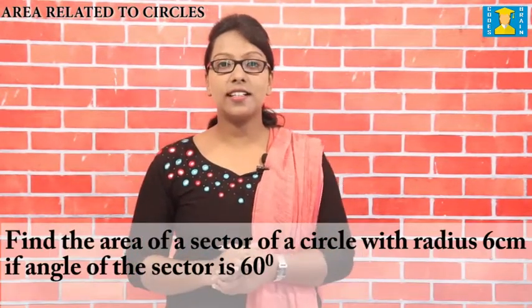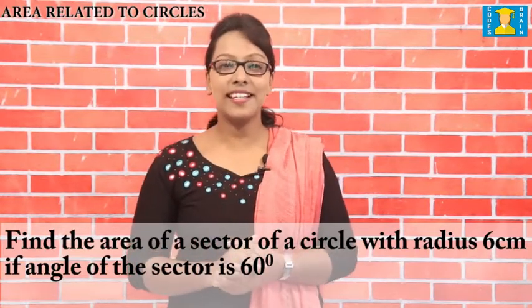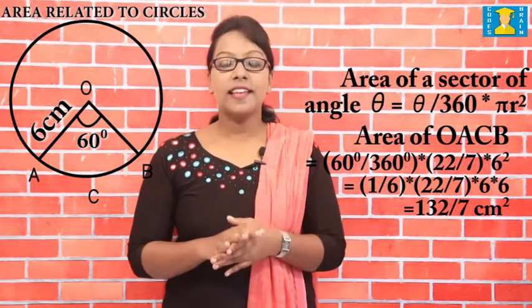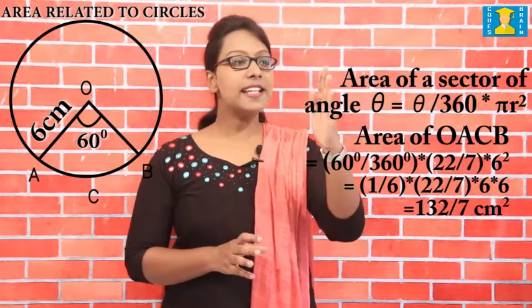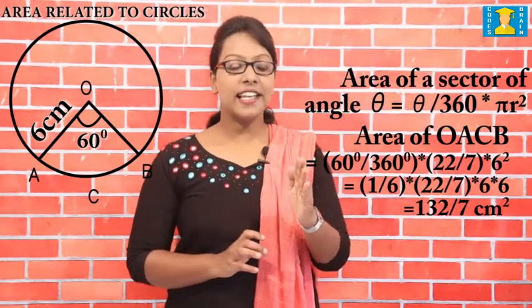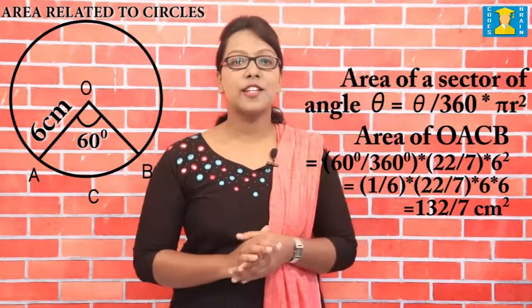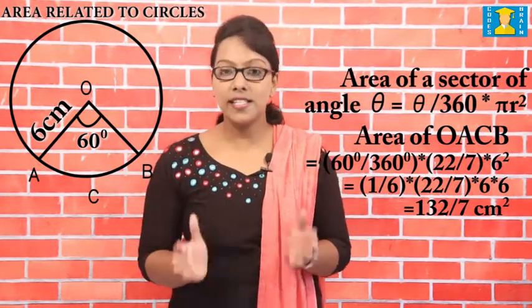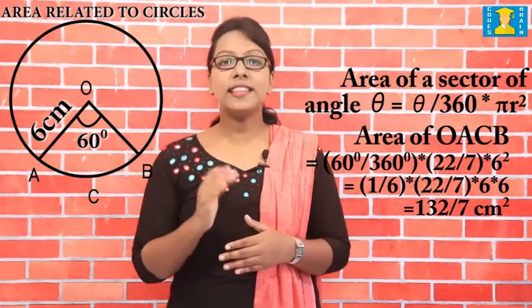Example: find the area of a sector of a circle with radius 6 cm if the angle of the sector is 60°. Let OACB be a sector making a 60° angle at centre O. Area of sector = θ/360 × πr² = 60/360 × 22/7 × 6² = 1/6 × 22/7 × 36 = 132/7 cm². Therefore, the area of the sector making 60° at the centre is 132/7 cm².